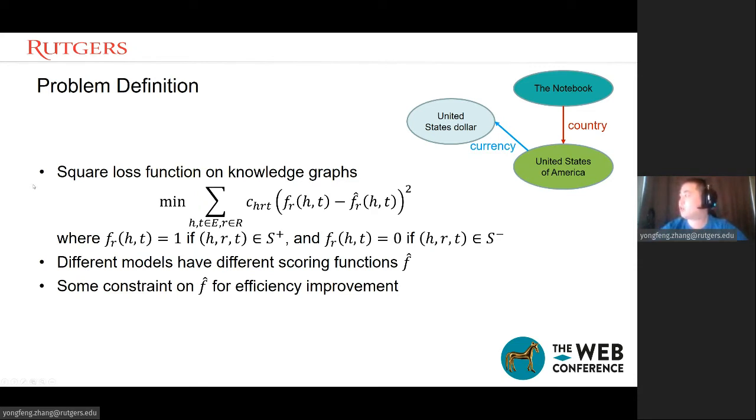Here it shows the example of knowledge graph. We can see the notebook as the head entity, United States of America as the tail entity, and country as the relation between them. So this connection is described as the head entity, relation, and tail entity. In this formula, H and T stand for the head and tail entity. R stands for the relation.